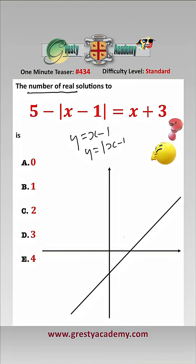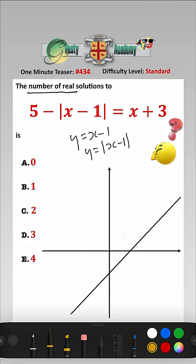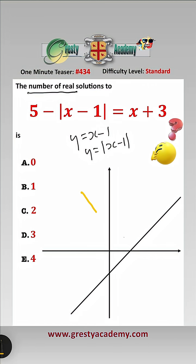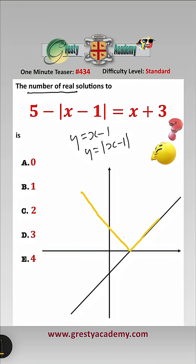So y equals mod of x minus 1. Let's just change the colour. We'll basically be equal to this, where it is all positive. That is y equals mod x minus 1.